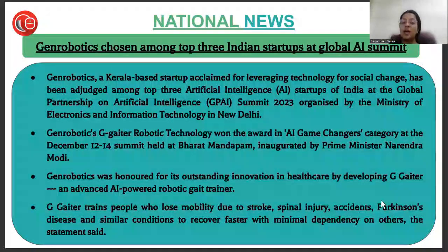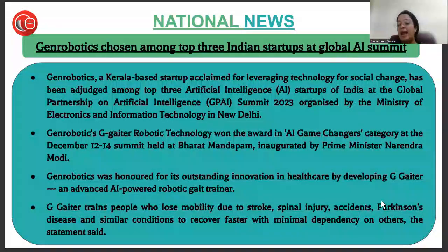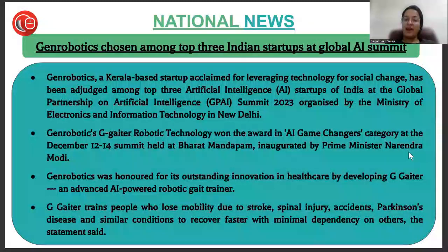Gen Robotics, a Kerala-based startup leveraging technology for social change, has been adjudged among the top three artificial intelligence startups of India at the Global Partnership on Artificial Intelligence Summit held in New Delhi. Gen Robotics was honored for its outstanding innovation in healthcare by developing G-Gator, an advanced AI-powered robotic gait trainer. G-Gator trains people who lose mobility due to stroke, spinal injury, accident, Parkinson's disease, and similar conditions to recover faster with minimal dependency on others.